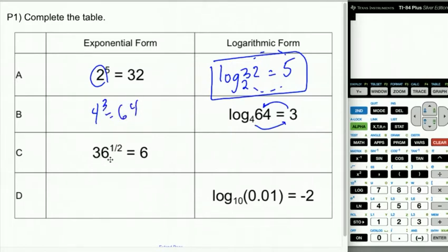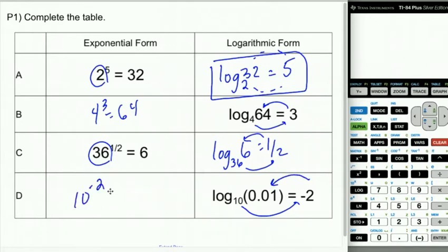Here my base is 36. So we're going to have log base 36 of 6 is 1 half. Because 36 to the 1 half is 6, which is the same thing as saying square root of 36. And then here we have 10 to the negative second equals 0.01. And that makes sense because this would be the same as 1 one hundredth, and that is 0.01.